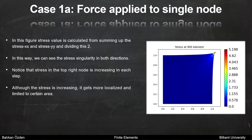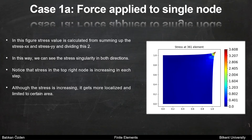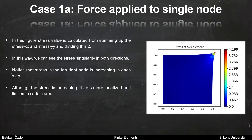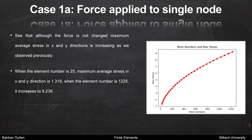If we repeat the same experiment with the average of stress xx and stress yy, we can see the stress singularity in both directions. Notice that the stress in the top right node is increasing at each step. Although the stress is increasing, it gets more localized and limited to a certain area. When the element number is 25, the maximum average stress in x and y direction is 1.3. When the element number is 1225, it increases to 9.2.